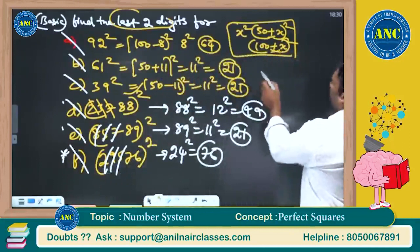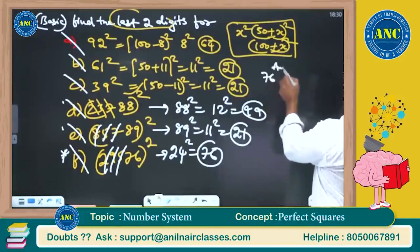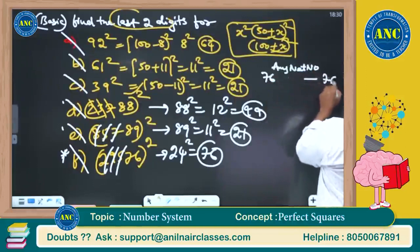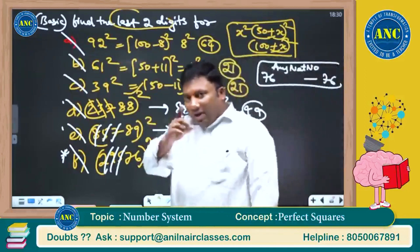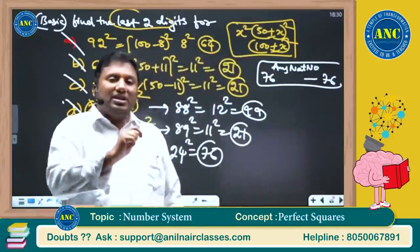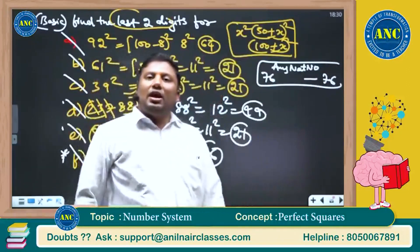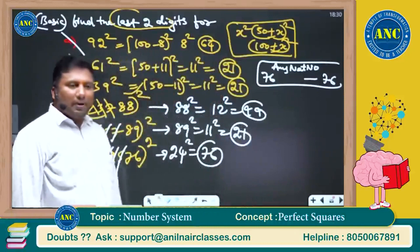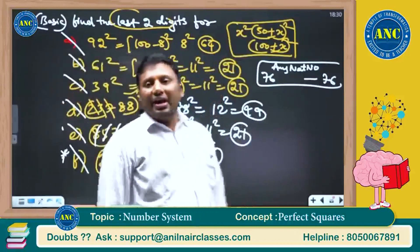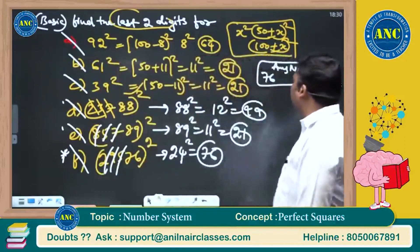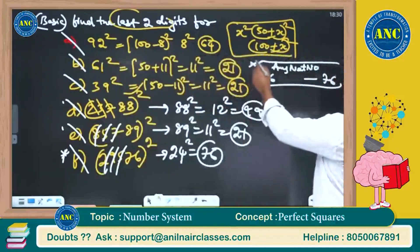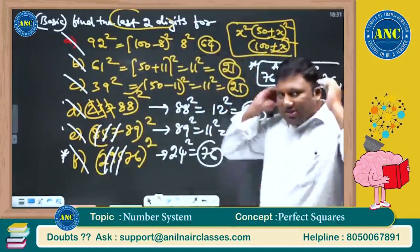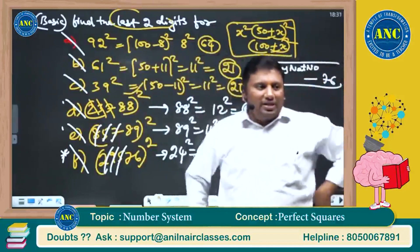Sixth question, please write down this point sir: 76 power any natural number is 76. 76 is a magic number. I will discuss the beauty of 76 when I am discussing the last two digits of a number. Please write down: 76 power any natural number is 76. I hope it is clear.